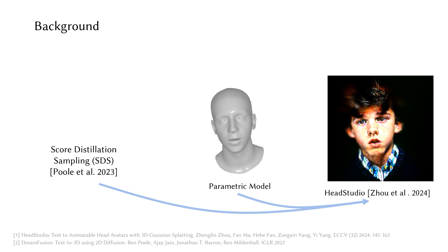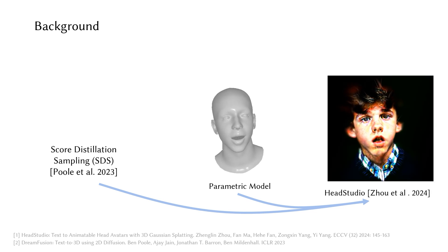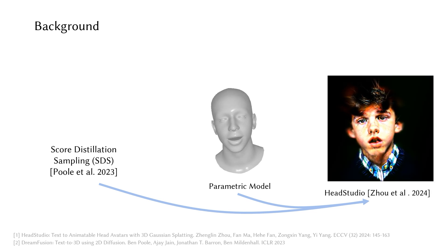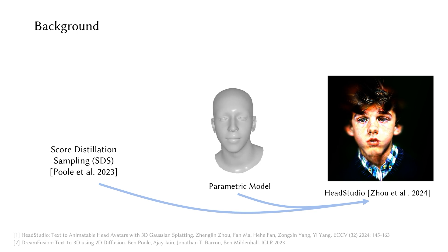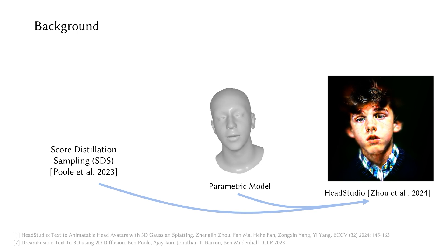We will provide some context and introduce the background. Existing diffusion model-based methods primarily rely on score-distillation sampling and parametric models to create animatable avatars. However, the use of score-distillation sampling often introduces ambiguities which degrade result quality.